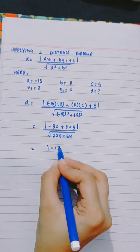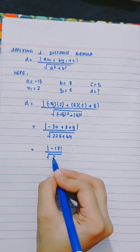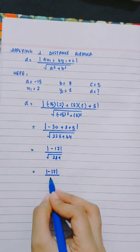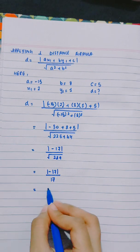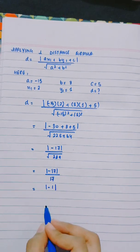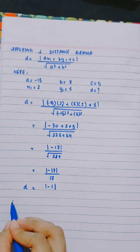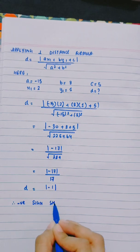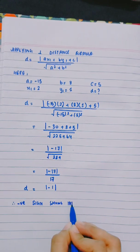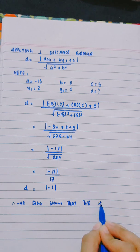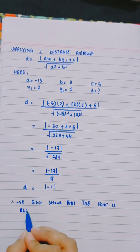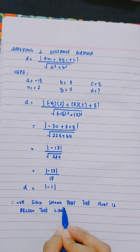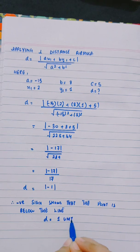That gives minus 30 plus 8 plus 5, divided by the square root of 225 plus 64, which is minus 17 divided by the square root of 289. Since 17 squared equals 289, the answer is mod of minus 1, which equals 1. The negative sign shows that the point is below the line, and the distance is 1 unit.